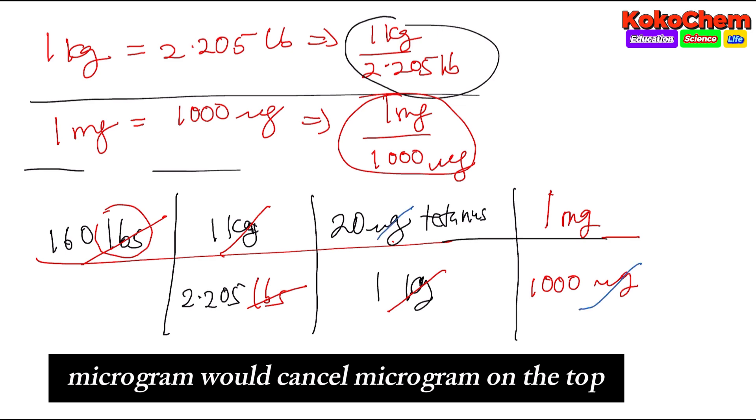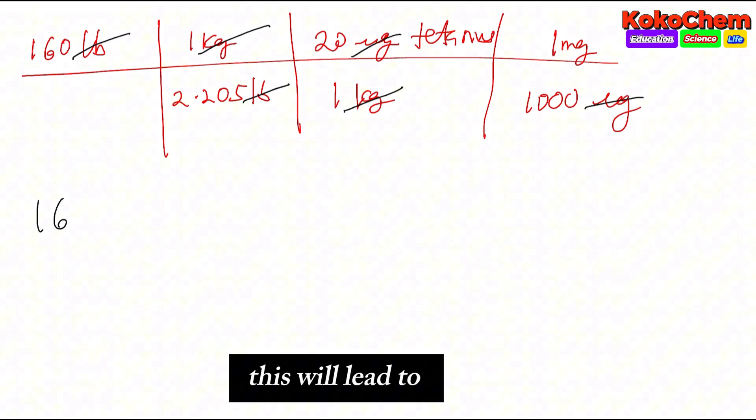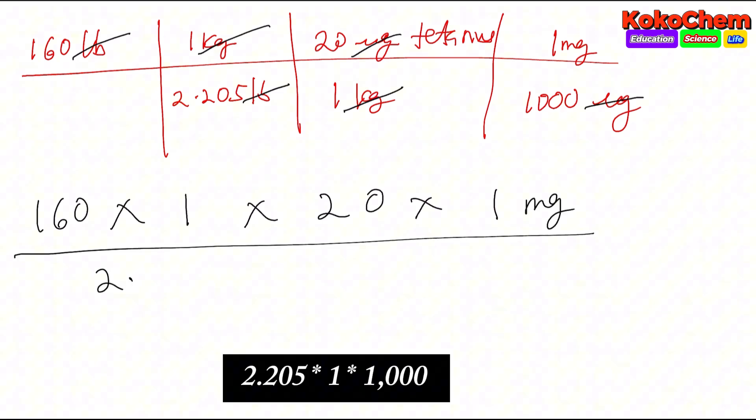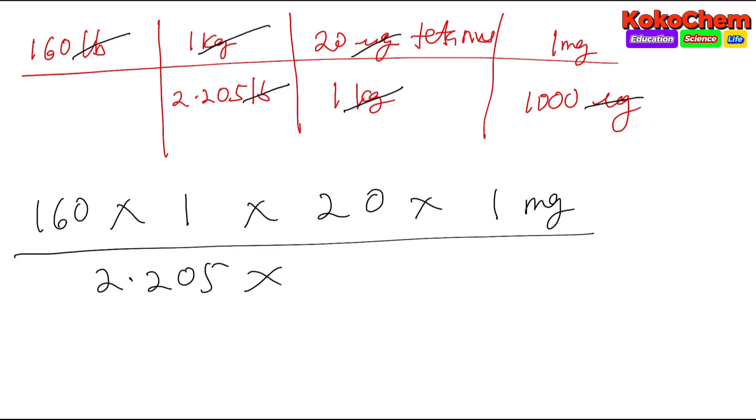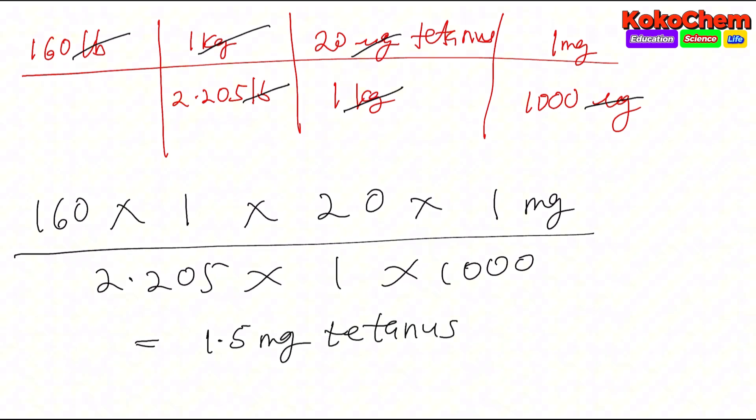Now we can calculate: 160 times one times 20 times one milligram divided by 2.205 times one times one thousand. The answer is 1.5 milligrams of tetanus.